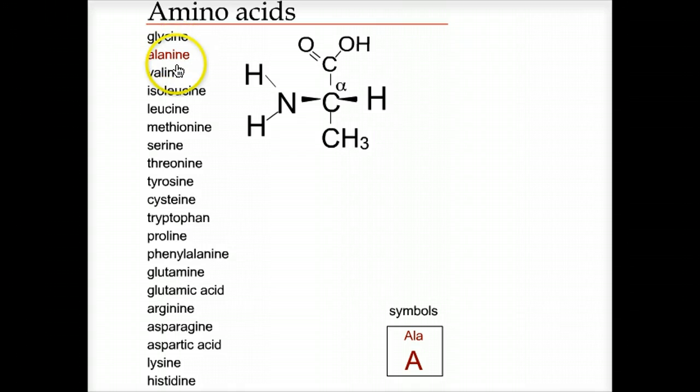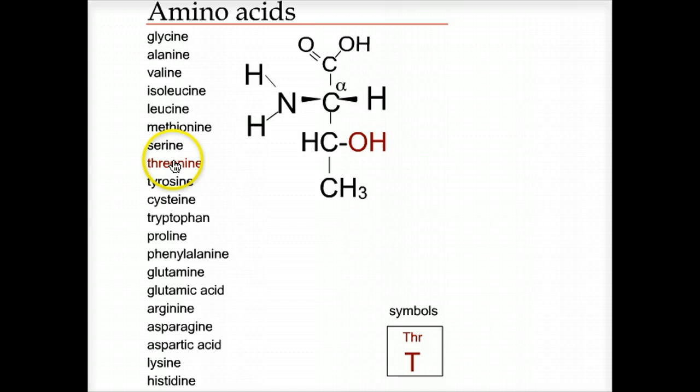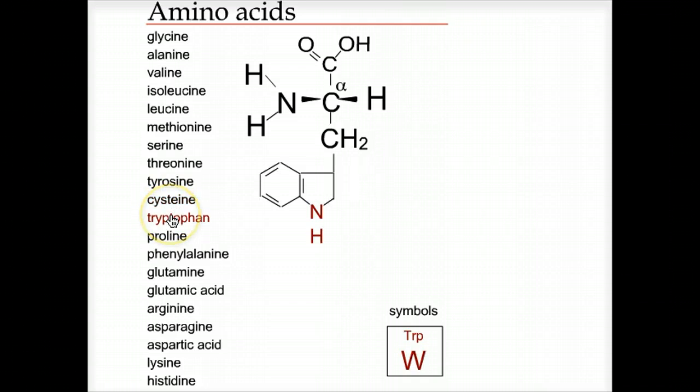It should be pretty obvious, for example, what distinguishes proline an amino acid from the others. Similarly, you can get a rough idea of the size and physical chemical properties of the various R groups, ranging from glycine the smallest through arginine, lysine, and histidine.